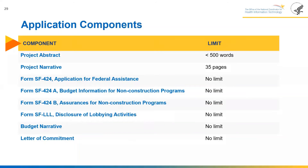Application components for the Special Emphasis Notice LEAP application include: a project abstract of no more than 500 words; a project narrative of up to 35 pages; Form SF-424 Application for Federal Assistance; Form SF-424-A Budget Information for Non-Construction Projects; Form SF-424-B Assurances for Non-Construction Programs; Form SF-424-A Disclosure of Lobbying Activities; a budget narrative; and a letter of commitment.